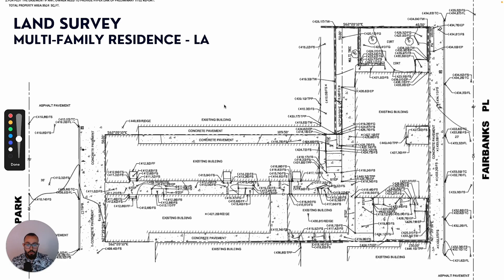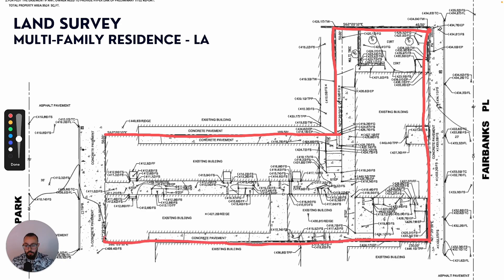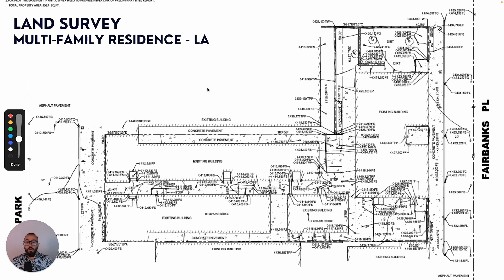This drawing is actually showing the property line right here of this property, which you can see right here. This is to my best understanding of reading land surveys, but this line should represent the property line. And this is one of the most important things about land surveys and why you need them — they will show you where the property line is, how big it is, how long, and how it compares to the neighbors.